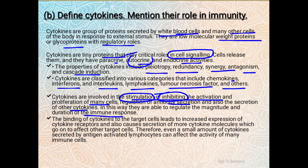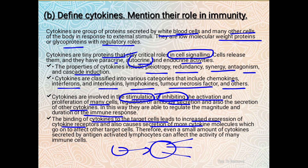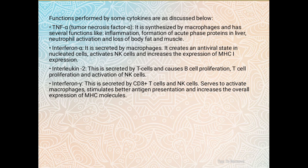The binding of cytokines to target cells leads to increased expression of cytokine receptors, which causes secretion of more cytokine molecules that can affect other target cells. Even a small amount of cytokines secreted by antigen-activated lymphocytes can affect the activity of many immune cells. Categories of cytokines include Tumor Necrosis Factor, Interferon Alpha, Interleukin-2, and Interferon Gamma.